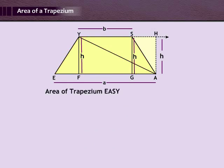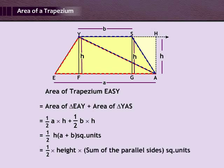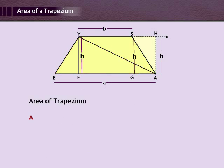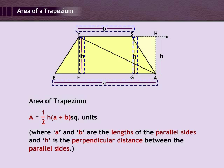Hence, the area of triangle EAY is half A into H, and the area of triangle YAS is half B into H. Therefore, the area of trapezium EASY equals half H into A plus B square units, which equals half into height into sum of the parallel sides. So area of trapezium A equals half H into A plus B square units, where A and B are the lengths of the parallel sides and H is the perpendicular distance between them.